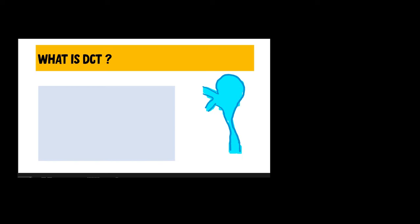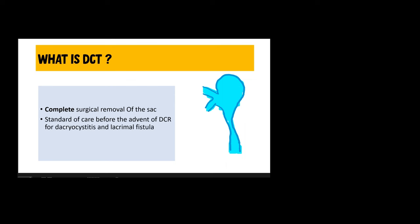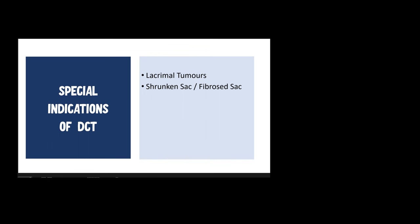In DCT (dacryocystectomy), there is a complete surgical removal of the sac. It was the standard of care before the advent of DCR surgery for dacryocystitis and lacrimal fistula. However, special indications still exist today: the presence of tumors, a shrunken or fibrous sac, a patient too young or too old to undergo DCR, or poor nasal mucosa due to gross atrophic rhinitis.